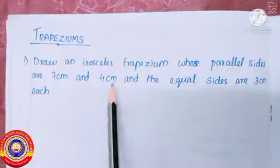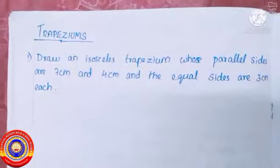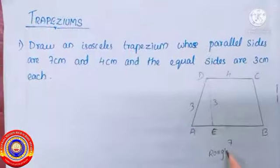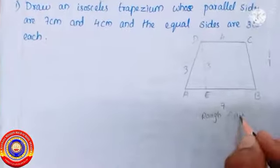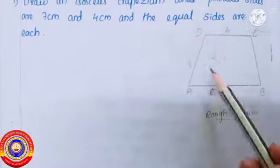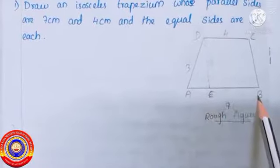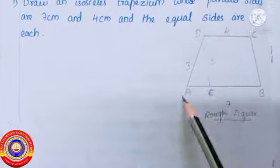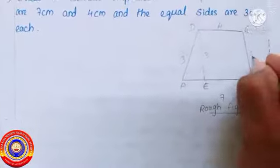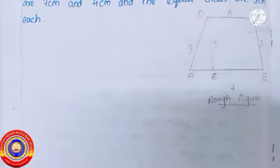The equal sides are three centimeter each. First of all, let's draw a rough figure. In this question, two parallel sides' lengths are given — that is seven centimeter and four centimeter — and the equal sides' length is given as three centimeter each. Divide the isosceles trapezium into a parallelogram and an isosceles triangle.